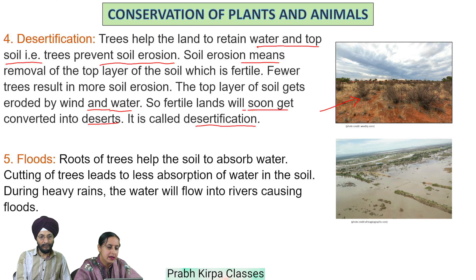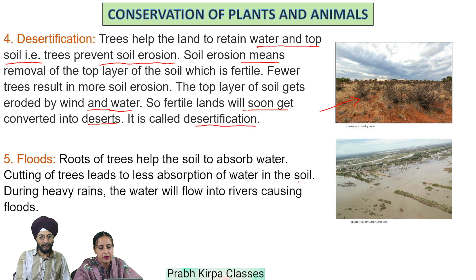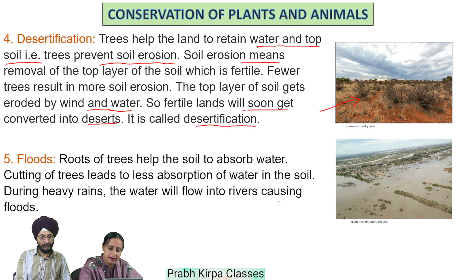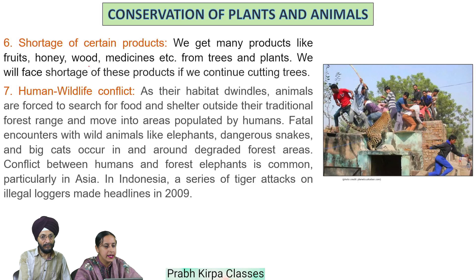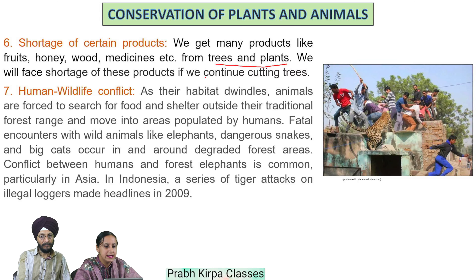Deforestation also leads to floods. Roots of trees help the soil absorb water; cutting of trees leads to less absorption of water in the soil. During heavy rains, water will flow into rivers, causing floods. There is also a shortage of certain products: we get many products like fruits, honey, wood, medicines, etc. from trees and plants, and we will face a shortage of these products if we continue cutting trees.